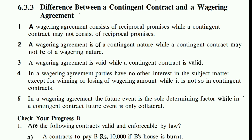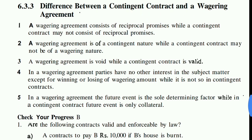The second point: a wagering agreement is of contingent nature, while a contingent contract may not be of a wagering nature. The wagering agreement is contingent in nature, but a contingent contract is not necessarily a wagering agreement.